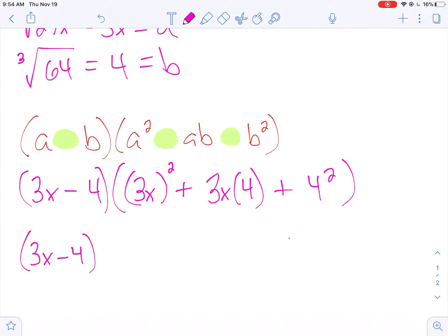3x minus 4. 3x squared - now remember, you're going to square the 3 and the x, which will give you 9x². Then 3x times 4 gives me 12x. 4 squared gives me 16.